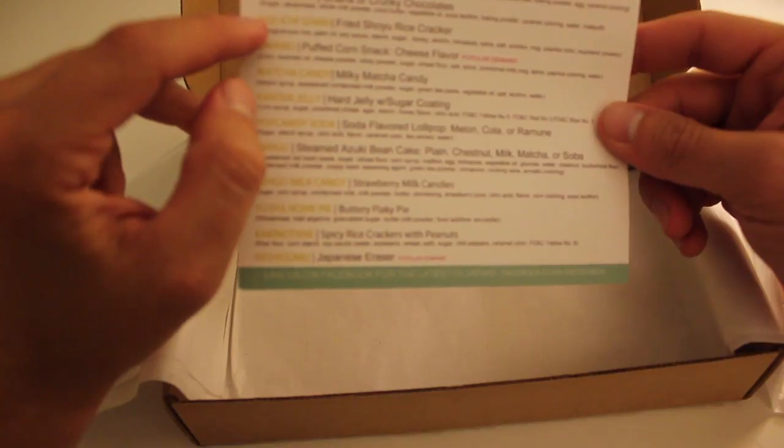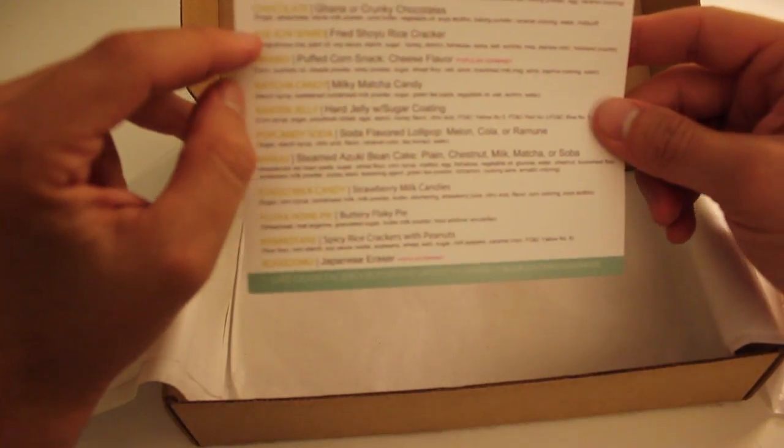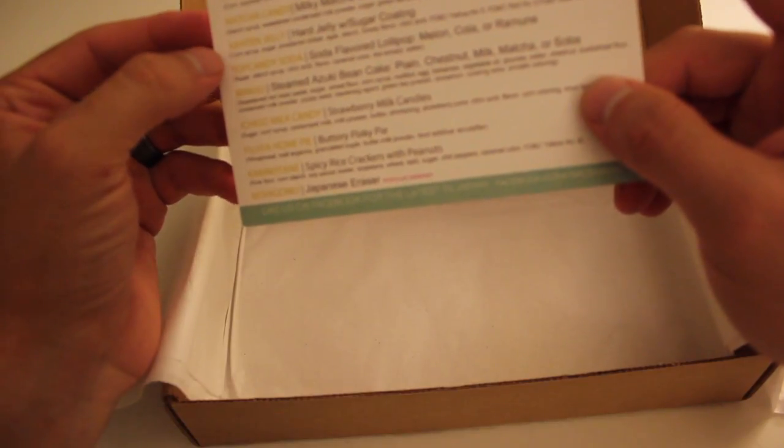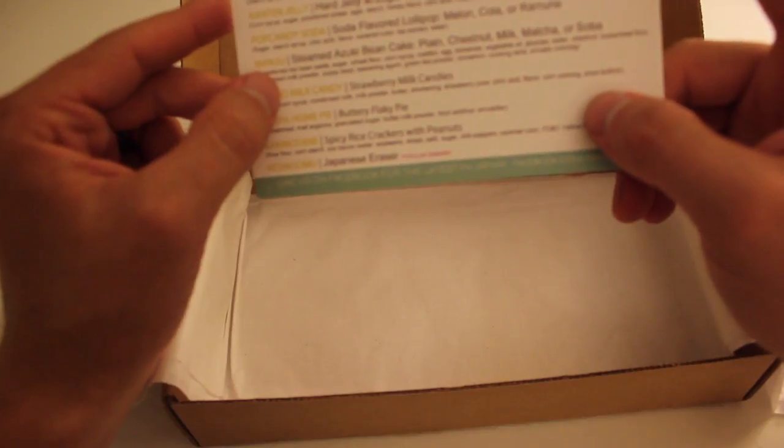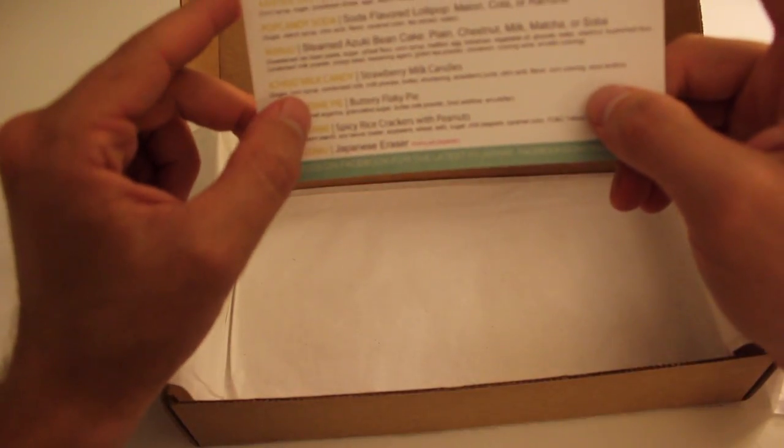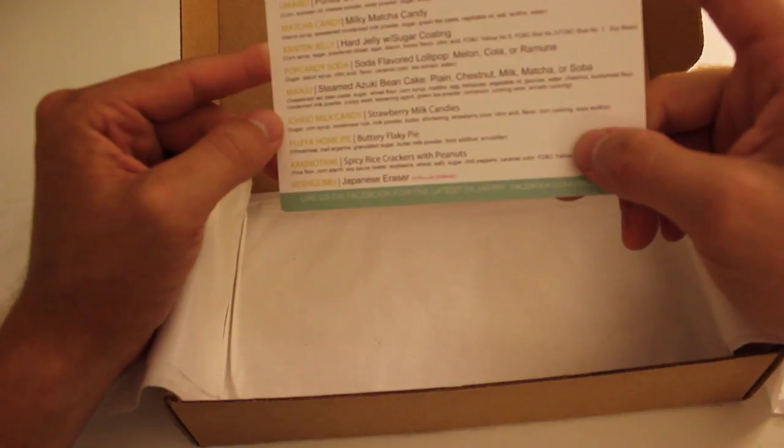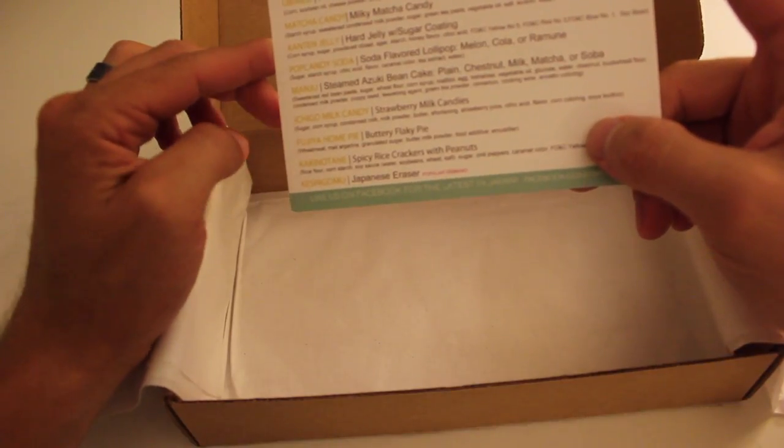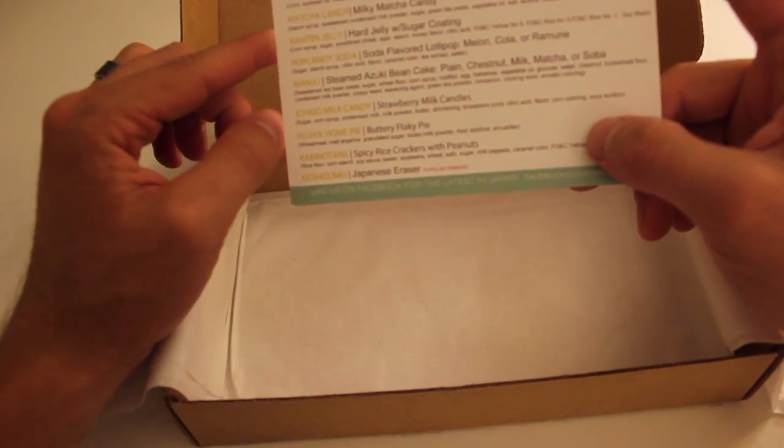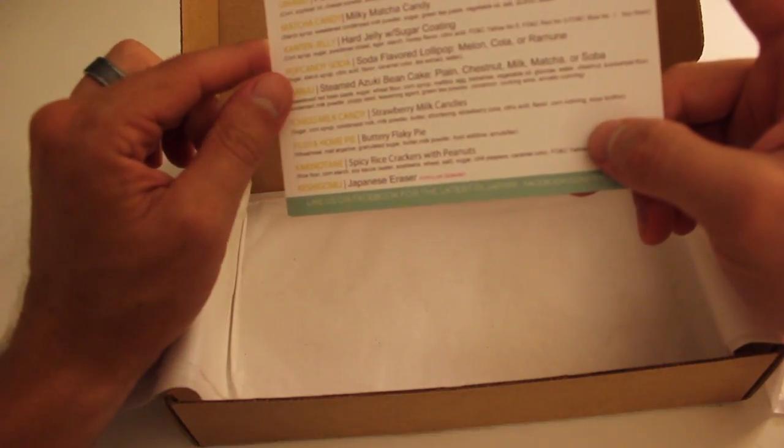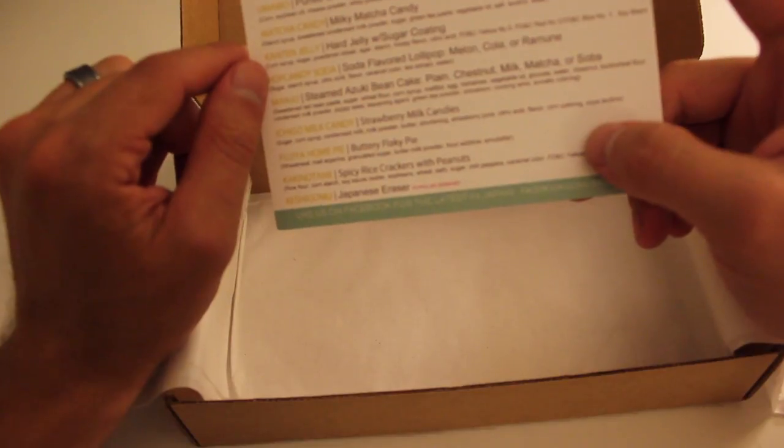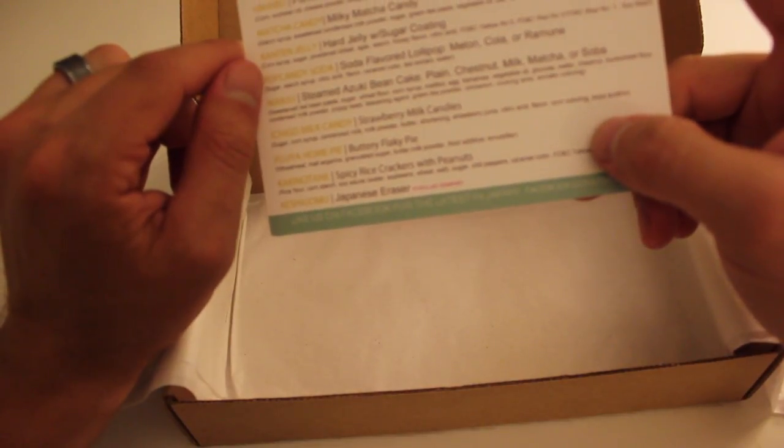We got the Koala March. The cranky chocolates. Shoyu rice crackers. The Umaibo corn snack. Matcha candy. The heart jelly. Pop candy soda. The manju bean cake. The milk candy. Fujiya honpai. Kaki no Tane. I'm probably butchering all these. Rice crackers. So let's try a few of these out.